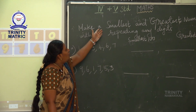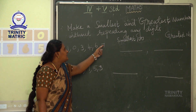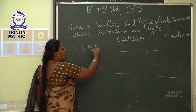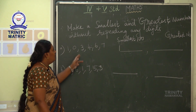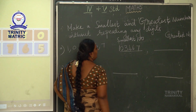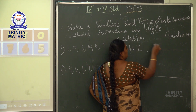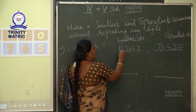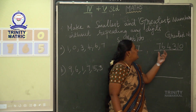Next, we are going to make smallest and greatest numbers without repeating any digits. I have given 6 digits. From these digits, we are going to form the smallest number and greatest number. For smallest, you should not write 0 in front — write 1, 0, 3, 4, 6, 7. That is the smallest 6-digit number. For greatest, just reverse it: 7, 6, 4, 3, 1, 0 — that is 7,64,310, the greatest number.